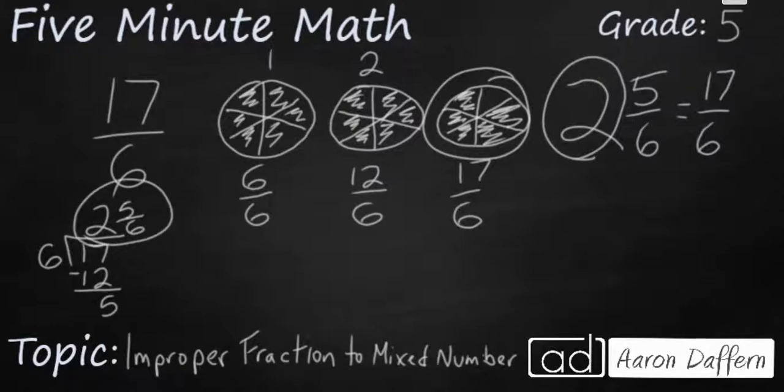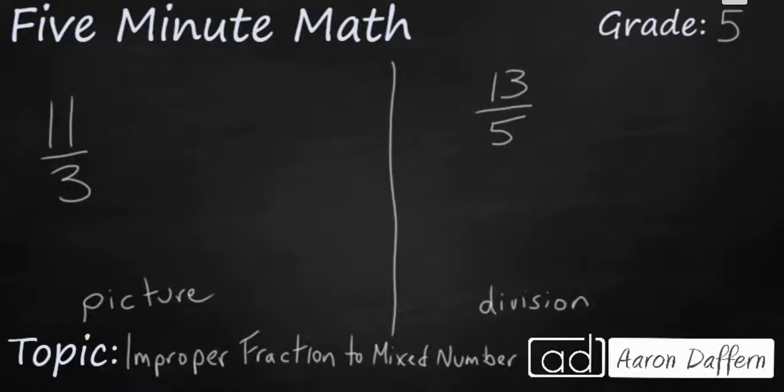Now it's time for you to try. All right. We've got 2 fractions for you to change into mixed numbers. For a bonus, try to solve 11 thirds by using a picture. Try to change 13 fifths by using division. Pause the video. Work them out. When you have your answer, start it back up. Check your work.